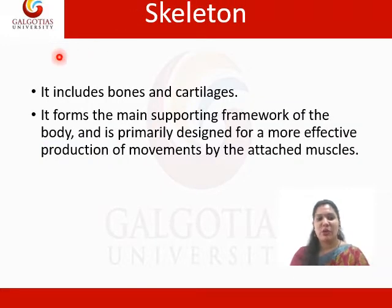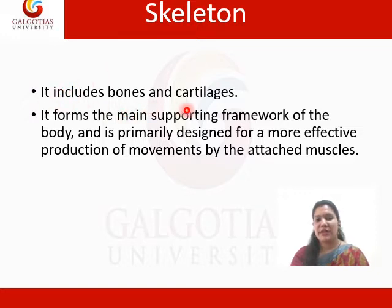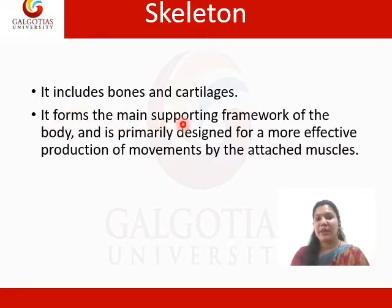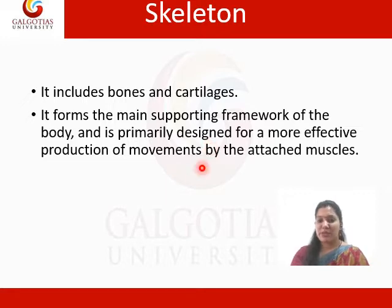First of all we will discuss about what is skeleton. A skeleton includes the bones and the cartilage. The whole framework of bones is called as skeleton. It forms the main supporting framework of the body which is primarily designed for more effective production of movement by the attachment of muscle, ligament, and tendon to those bone structures.